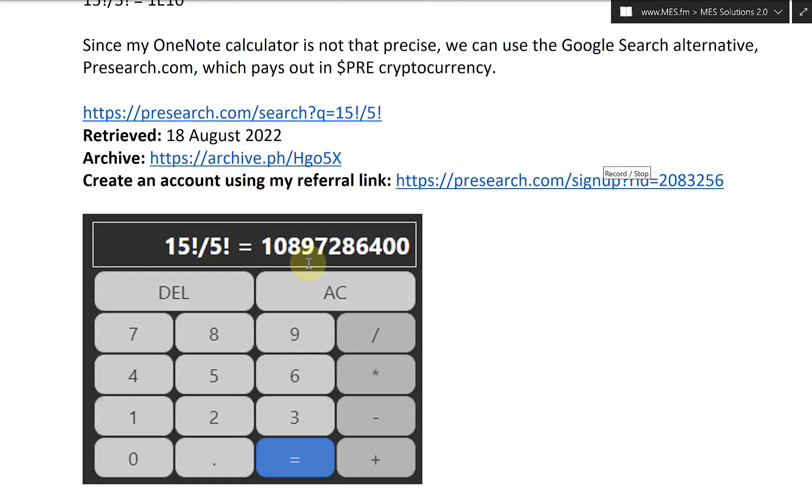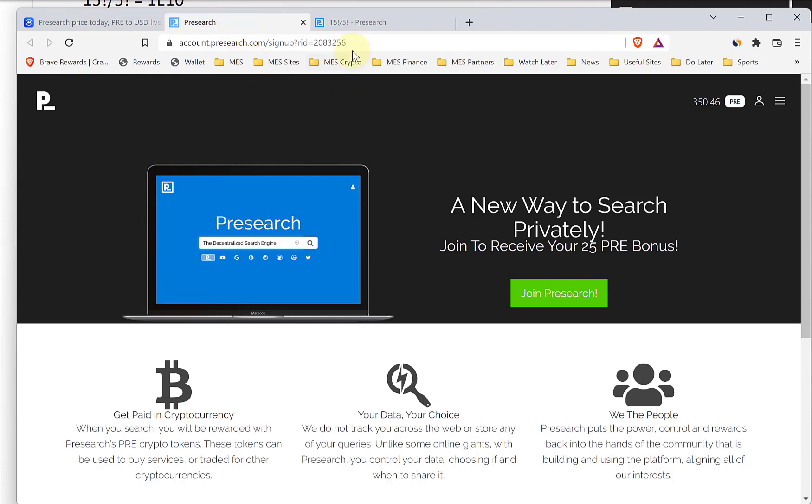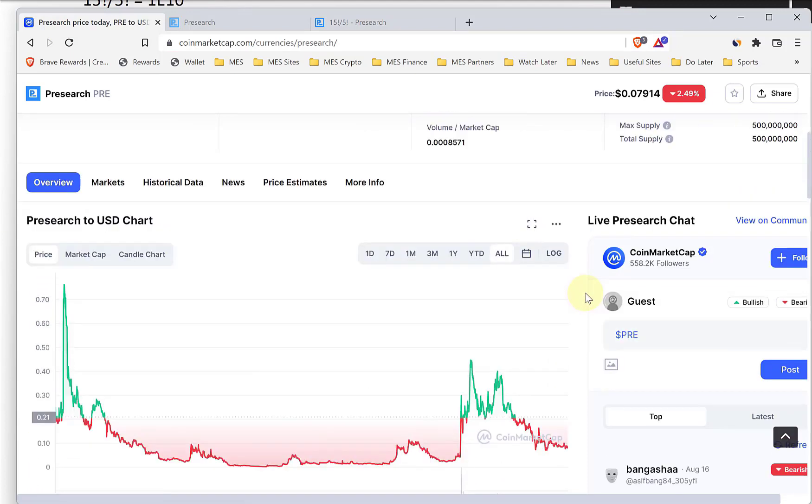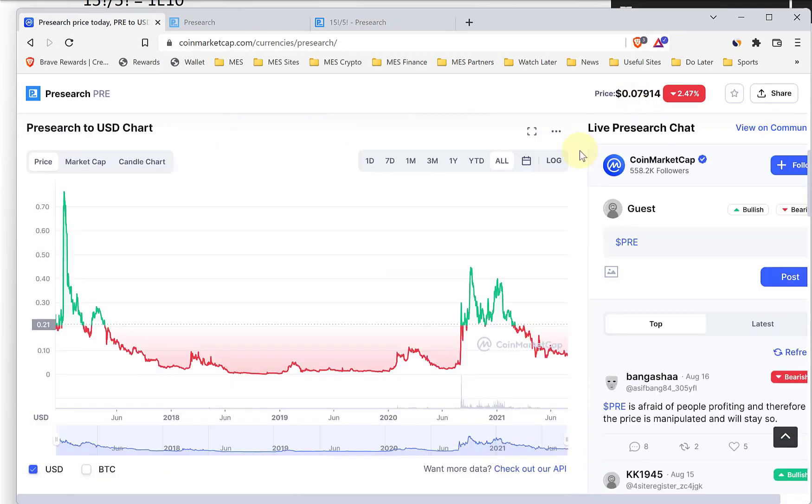And before going further, make a note, if you sign up for Presearch, just use my referral link right here. So I get a few PRE just if you click here, it looks like it's pretty much like Google search, but you earn PRE. So it's a cryptocurrency token. Here's the calculator. So just type in automatically brings up the calculator and so on. So yes, if you sign up, use my referral code or link, and you can see the price here of PRE goes up and down and so on is currently at 7.9 cents.